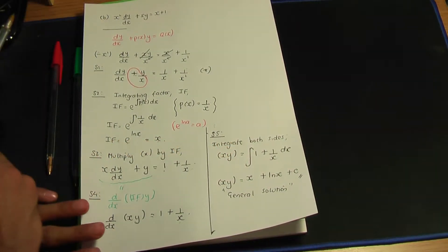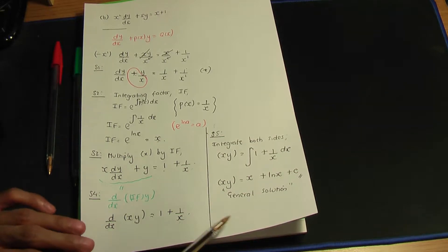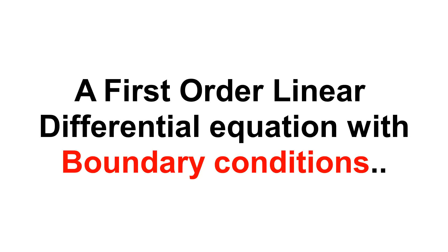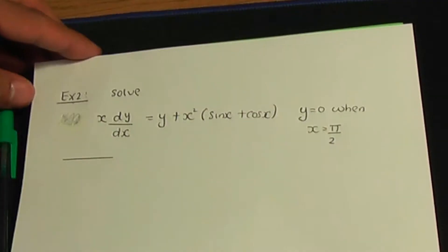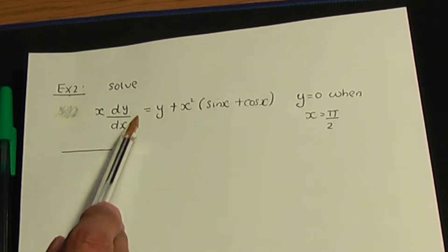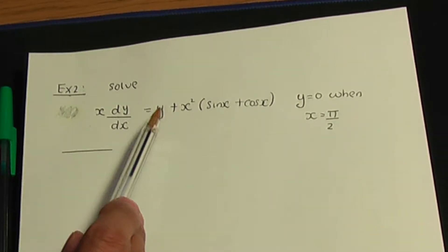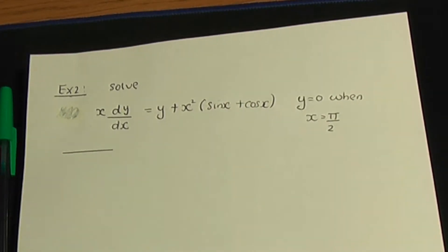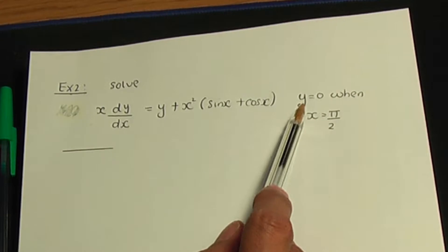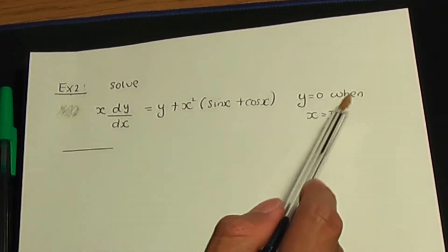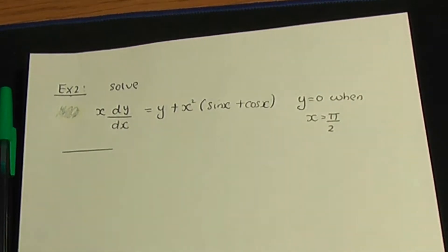Let's have an example whereby we can calculate a particular solution. In example number 2, let's solve x dy/dx = y + x² (sin x + cos x). We have some values given: y equals 0 when x is π/2. We're going to use these values to work out the integration constant C.